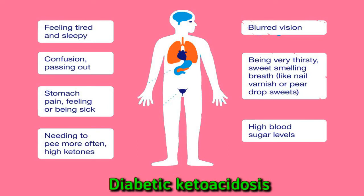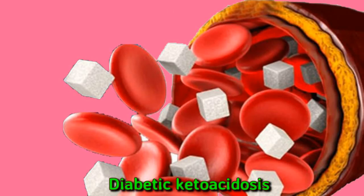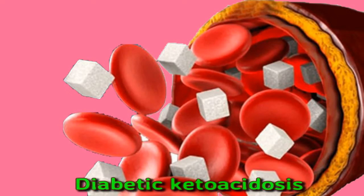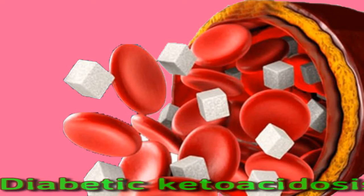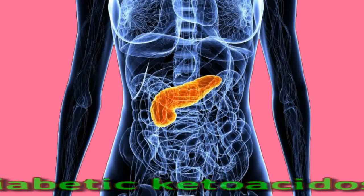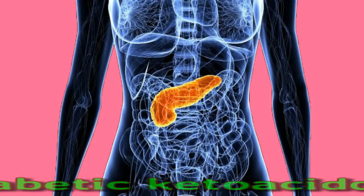People with diabetic ketoacidosis will also have high levels of glucose in their blood. Since the sugar cannot move from the blood into the cells, the body tries to reduce glucose levels by allowing glucose to leave in the urine, which also causes the body to lose more water. A person with diabetic ketoacidosis will feel tired and thirsty, need to urinate more frequently, and may have nausea, vomiting, flushed and dry skin, a fruity smell on the breath, and shortness of breath.